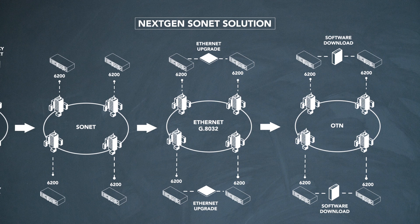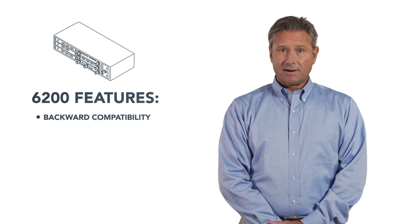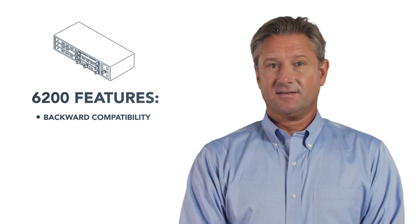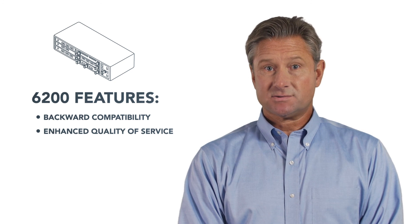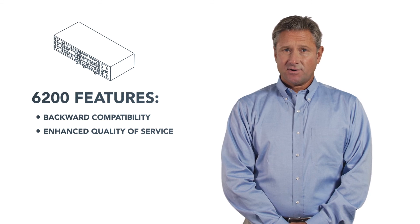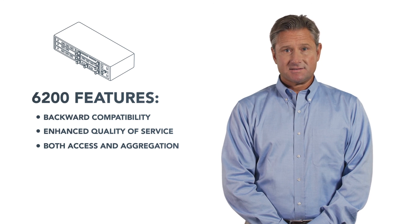On the Sonnet side, a customer can deploy a full OC192 protected ring. On the Ethernet side, a utility can deploy two 10-gig protected rings. And on the OTN side, this can be an OTU2 or a 10-gig ring. The 6200 is backward compatible with legacy OT network elements and TDM infrastructure, and can provide enhanced quality of service by leveraging either the packet or the OTN switch fabric, offering a utility multi-path resiliency. The 6200 can also serve as both an access and an aggregation platform onto a core DWDM network like the Ciena 6500.